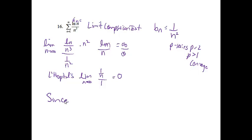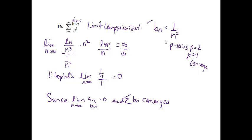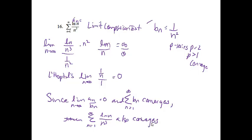Now if I plug in infinity, I get 0. We know that if we get an answer of 0, and b sub n converges, then a sub n will also converge. So since the limit as n approaches infinity of a sub n over b sub n equals 0, and the series b sub n converges, the series from n equals 1 to infinity of ln(n) over n³ also converges.